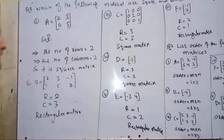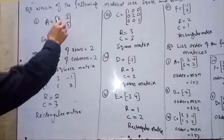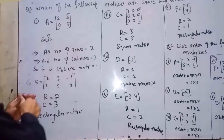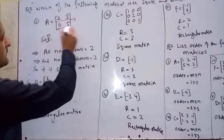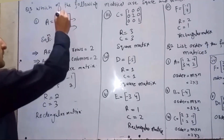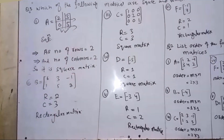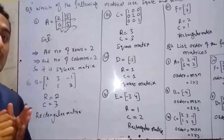Number one: A = [[2, 3], [0, 5]]. Number of rows = 2 and number of columns = 2. So it is a square matrix because number of rows equals number of columns — that is a square matrix.